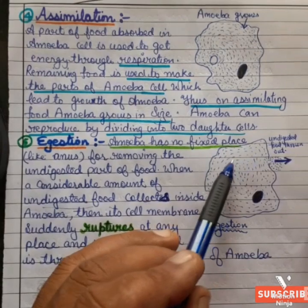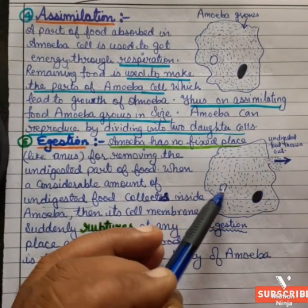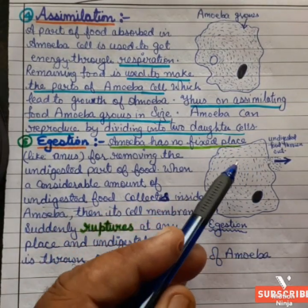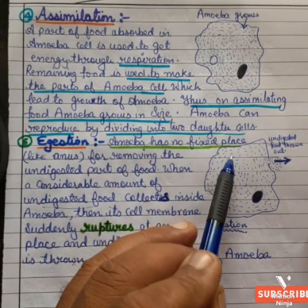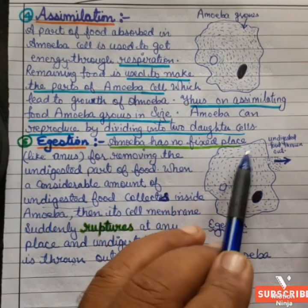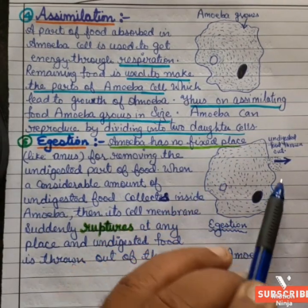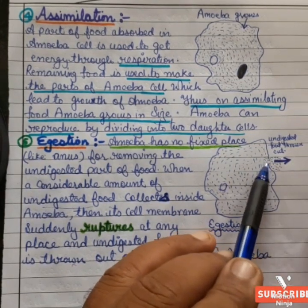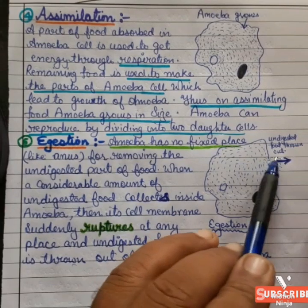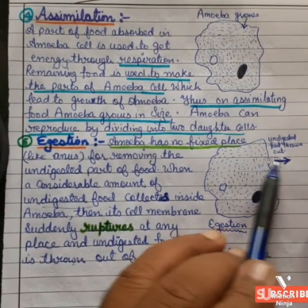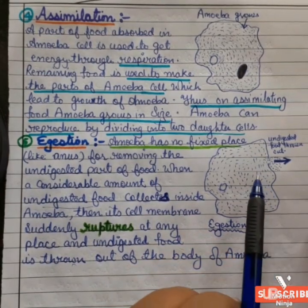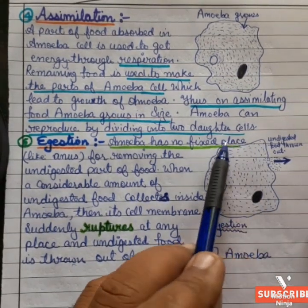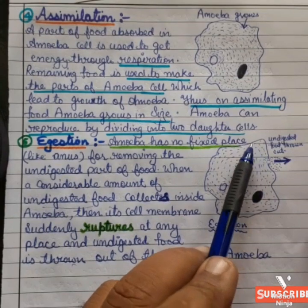Amoeba has no fixed place to excrete undigested food particles. When undigested food accumulates inside, the cell membrane ruptures, and the undigested food is passed out of the body of the amoeba through this tearing of the cell membrane.